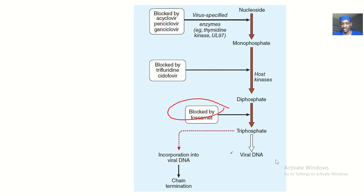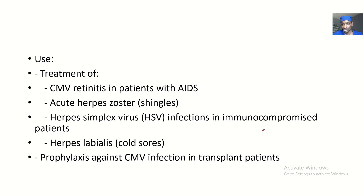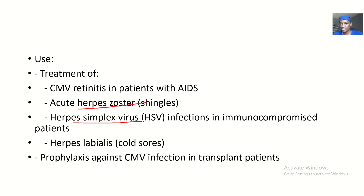Foscanet blocks and terminates viral replication. It can be used for treatment of cytomegalovirus retinitis in patients with AIDS. It can also be used to treat acute herpes zoster infections (shingles), herpes simplex virus infections in immunocompromised patients — those with a weakened immune system — and herpes labialis.